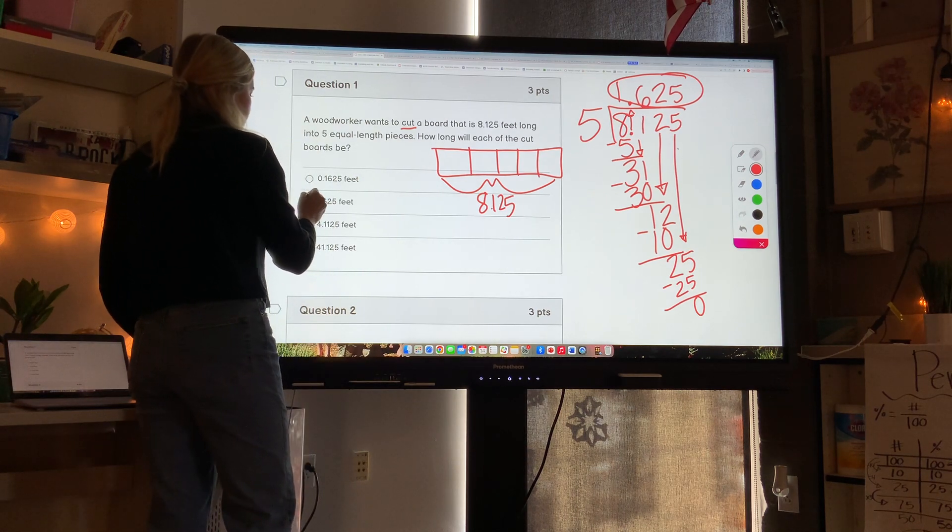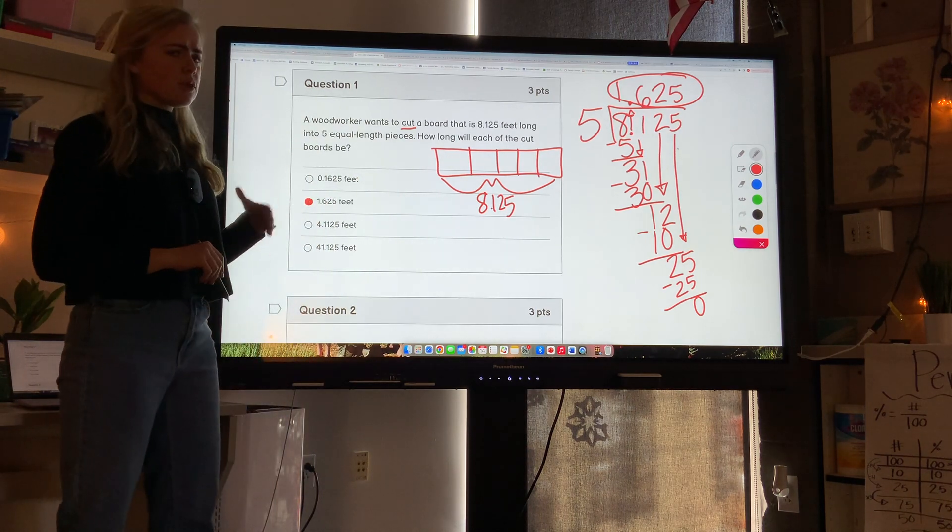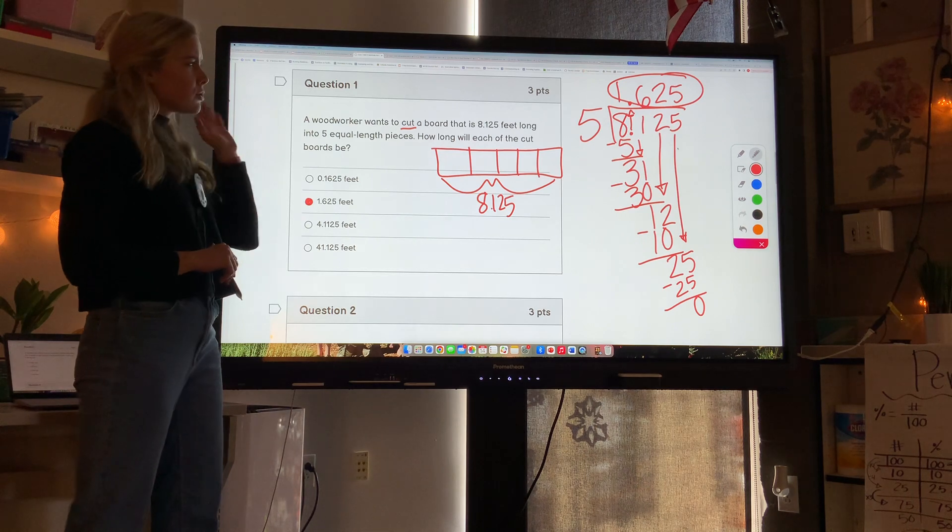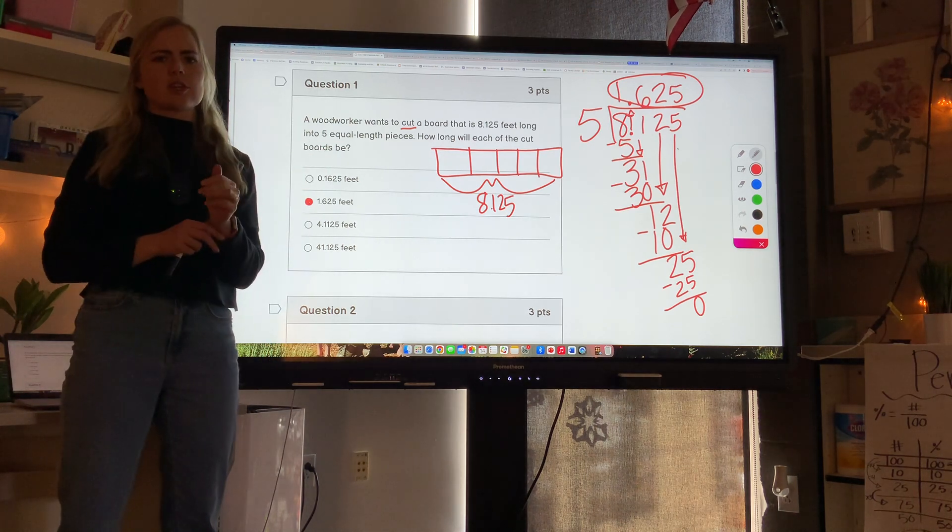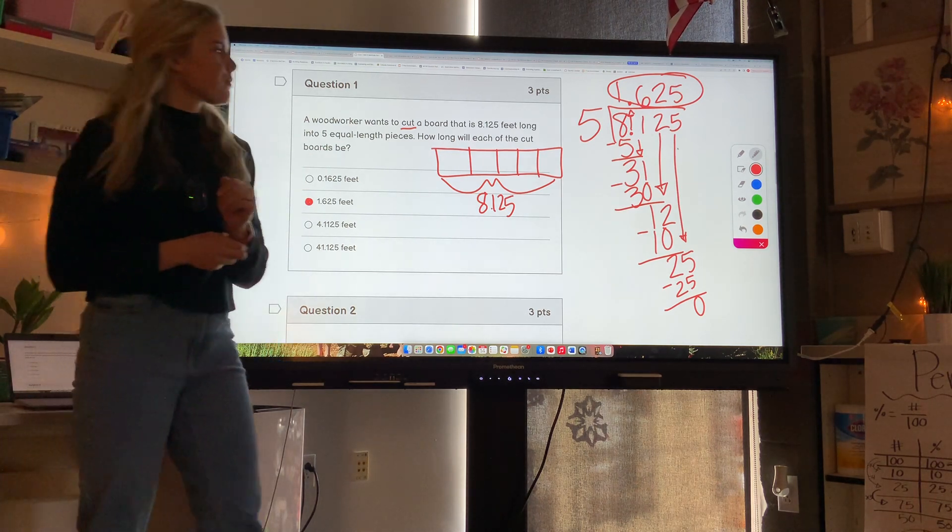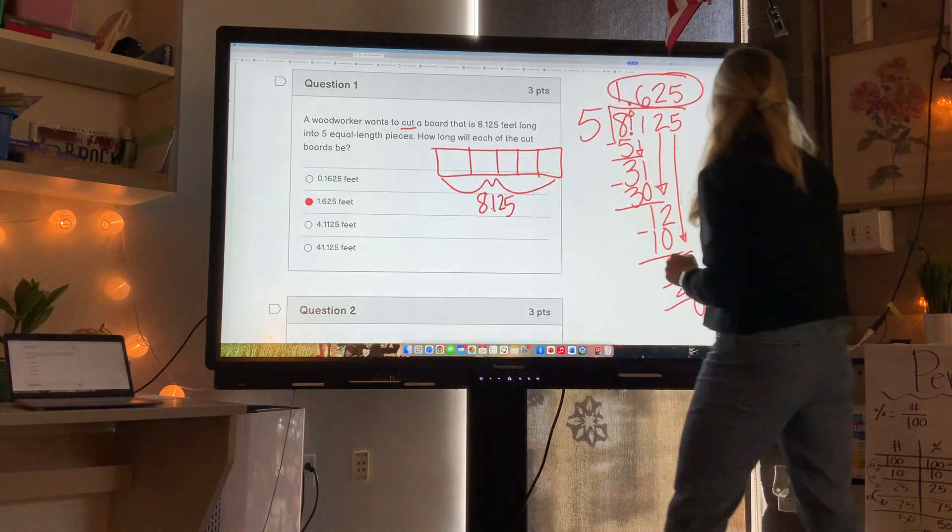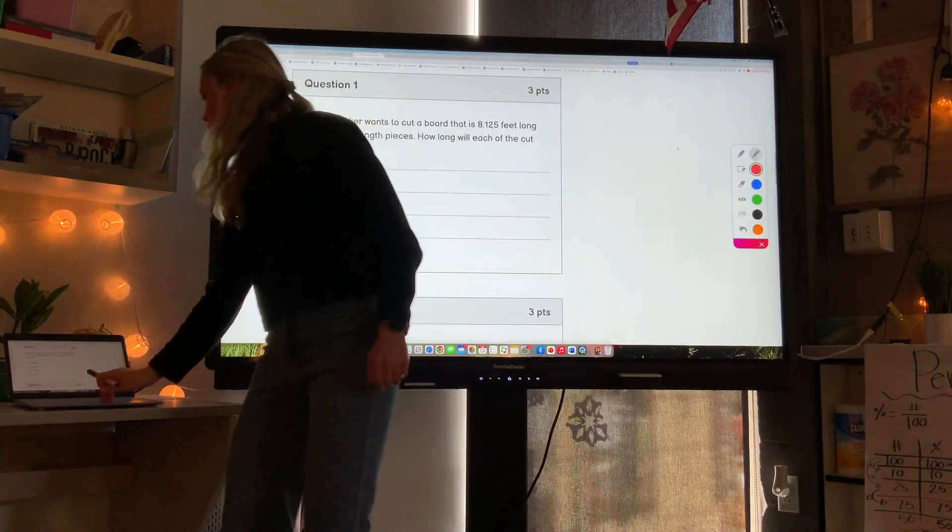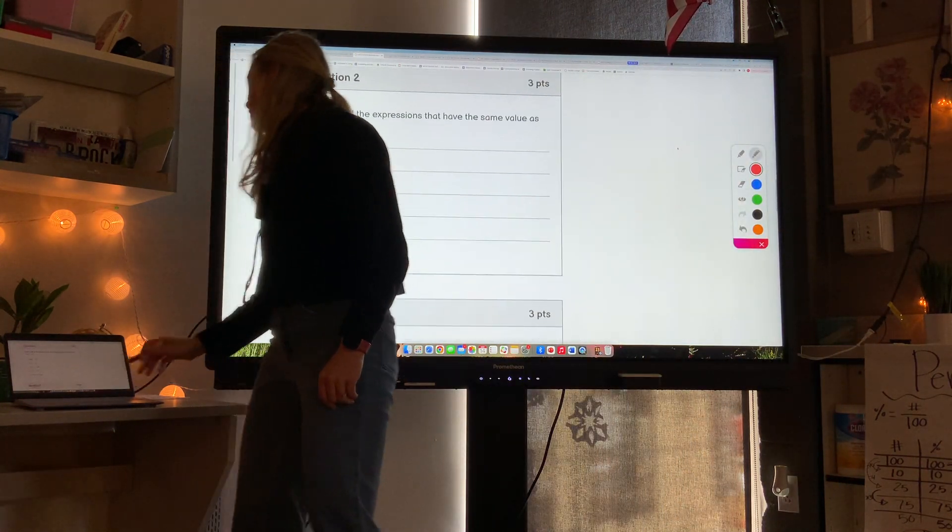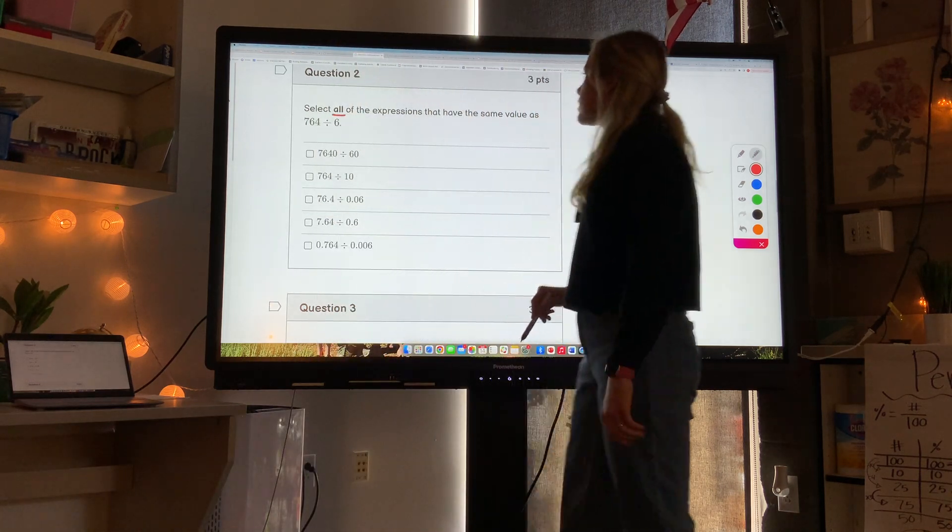This is multiple choice, so you could just guess and check, but please show your work, write down your work on scratch paper so you can remember how to do these problems on your own. Question 2: select all of the expressions that have the same value as 764 divided by 6.